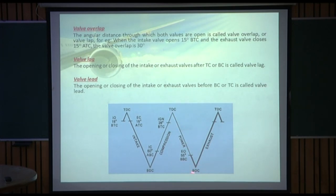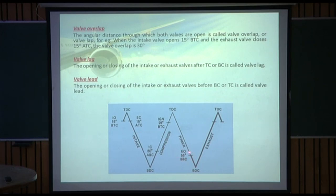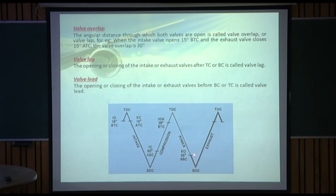Before the piston reaches BDC on the power stroke, the exhaust valve is opened, allowing the burned fuel-air mixture to be scavenged out of the cylinder. The exhaust stroke starts here. The exhaust valve is opened before bottom center and closes once the intake stroke has started — early opening and late closing of the exhaust valve allows more thorough scavenging of the exhaust gases.